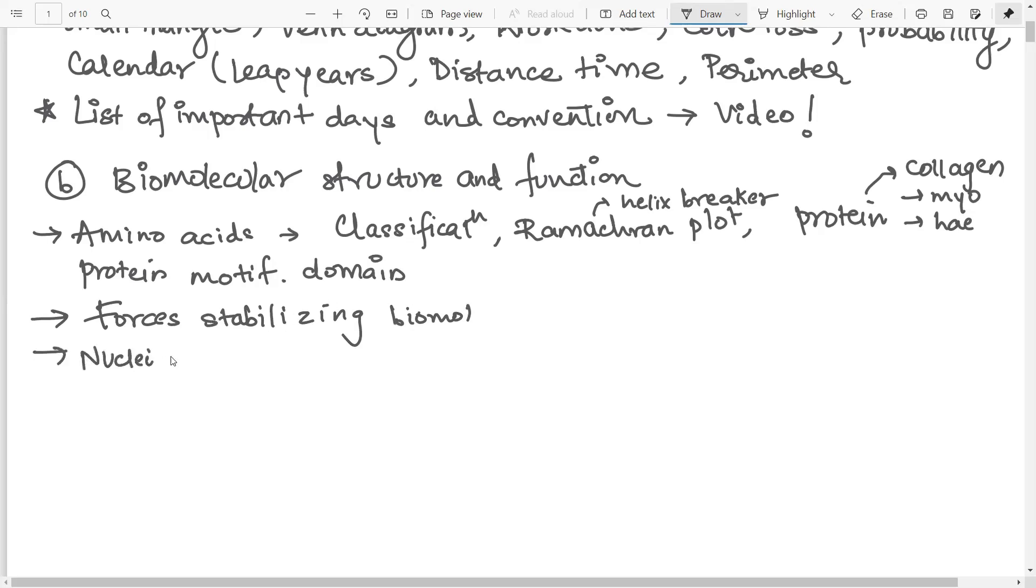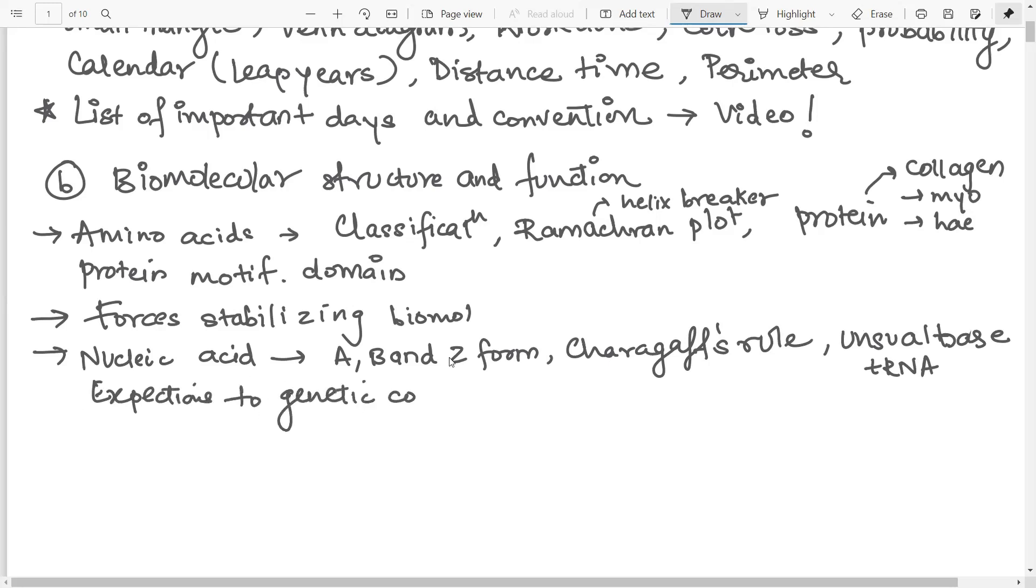Then next moving on to the nucleic acid. In nucleic acid, you need to very well know about the A, B and Z forms of the DNA. Then simple kind of questions, but they have asked from Chargaff's rule. Then you need to also know the unusual bases that are present in tRNA. You also need to know the secondary structure of tRNA, the hairpin and the cloverleaf structure. And one small thing here I would like to add is the exceptions to the genetic code. So questions have been asked from these.